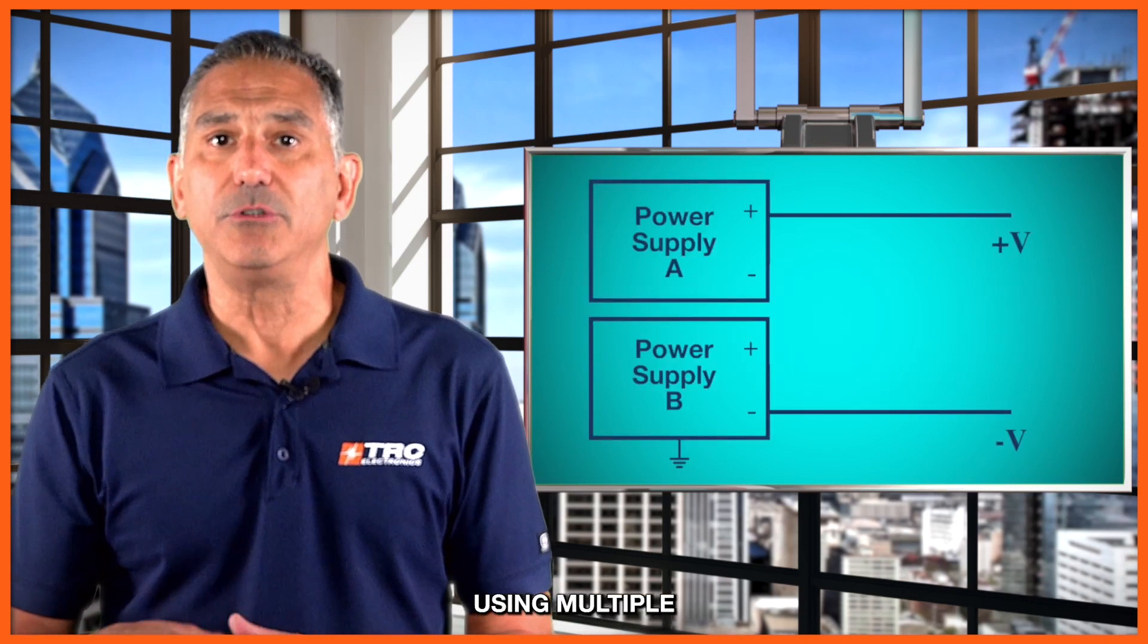For floating outputs, designers can create both positive and negative output voltages using multiple floating output power supplies. Let's look at this chart right here where we connect the minus V out of power supply one to the plus V out of power supply two, and a common reference is now obtained. Now when we measure the common reference of minus V out of power supply two, we can see a negative voltage. This is only possible when you use power supplies with floating outputs.